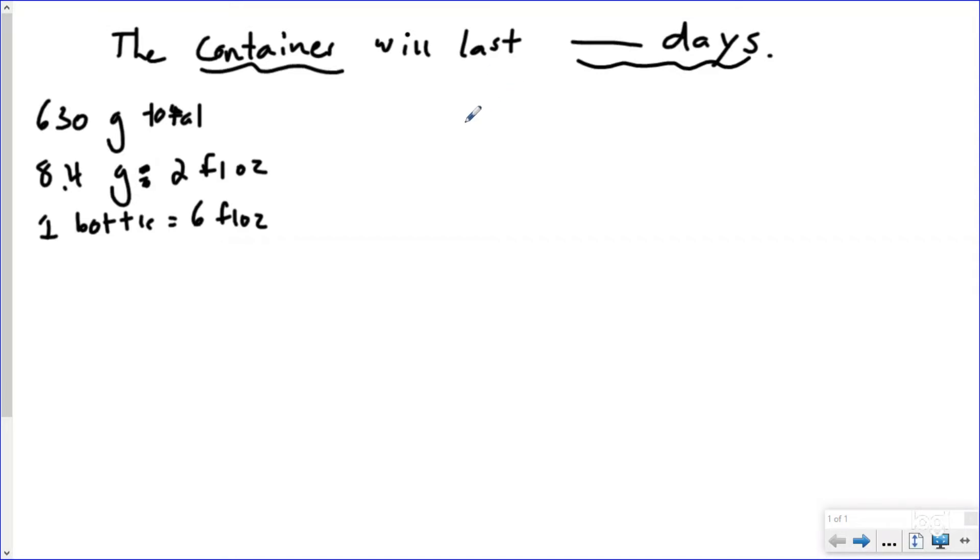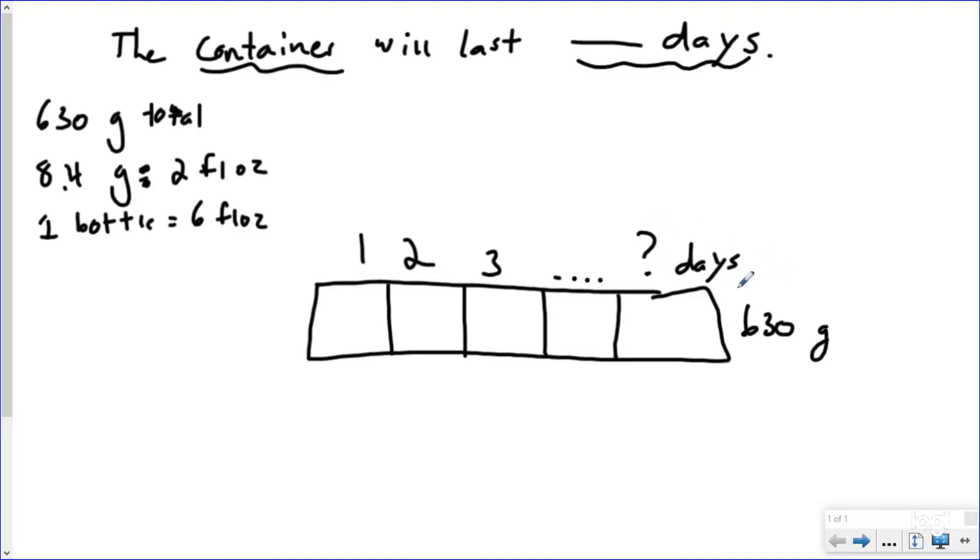So the first thing I want to do is I want to draw a visual model. And so here's my visual model. We use tape diagrams here at Quarantine Math. Maybe you're familiar with them, maybe you're not. But you can really do that any way you want. And so it's a bad tape diagram, but that's okay, it's quarantine. Who cares? So we have 630 grams total, and I know that I'm going to be splitting this up into equal days. And so I'm going to make this equal groups. And I know one, two, three, dot dot dot. I want to know how many days is my 630 grams going to last.